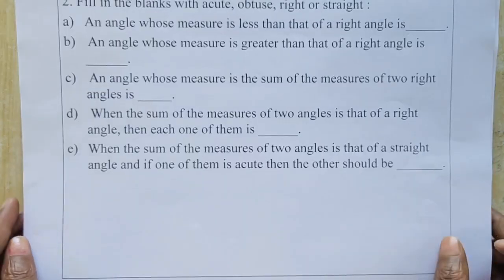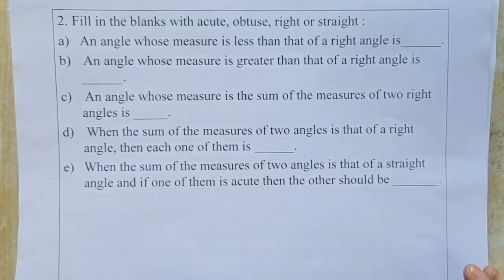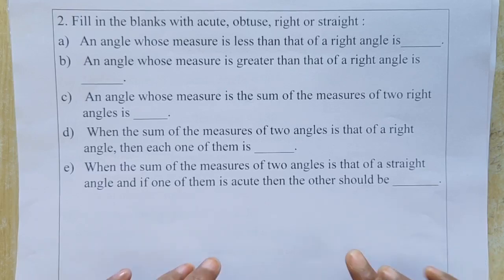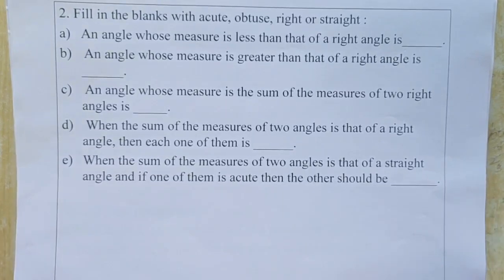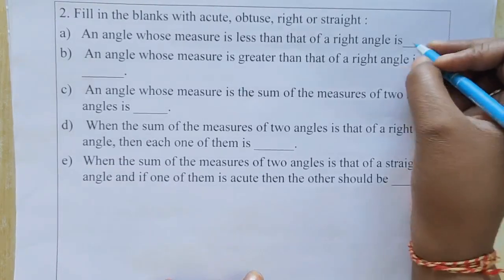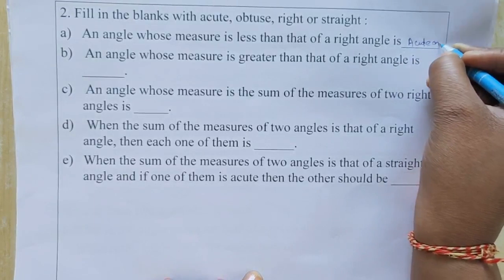Second question: Fill in the blanks with acute, obtuse, right, or straight. Part A — an angle whose measure is less than that of a right angle. If an angle is less than 90 degrees, it is an acute angle.